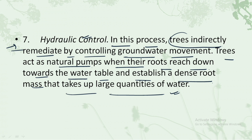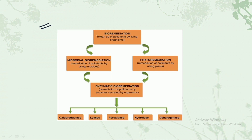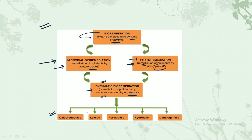Those were the seven main mechanisms used in phytoremediation. In the summary flowchart: bioremediation involves cleanup of pollutants by living organisms; phytoremediation involves remediation using plants; microbial bioremediation uses microbes to clean the environment; and enzymatic bioremediation involves remediation by enzymes secreted by organisms — the main enzymes being oxidoreductase, lyase, peroxidase, hydrolase, and dehalogenase.